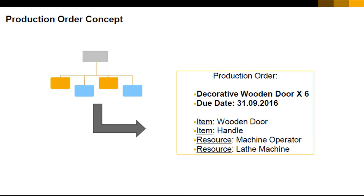A production order is a command to produce or repair a production item. A bill of material is copied into the production order document. Then the needed quantity of finished item is entered together with the desired due date of production and other relevant data. The production order also tracks all the material transactions and costs that are involved in the production process.